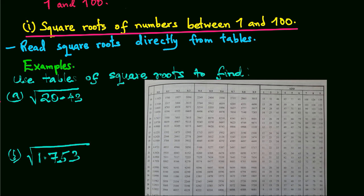For numbers between 1 and 100, their square roots are read directly from tables.